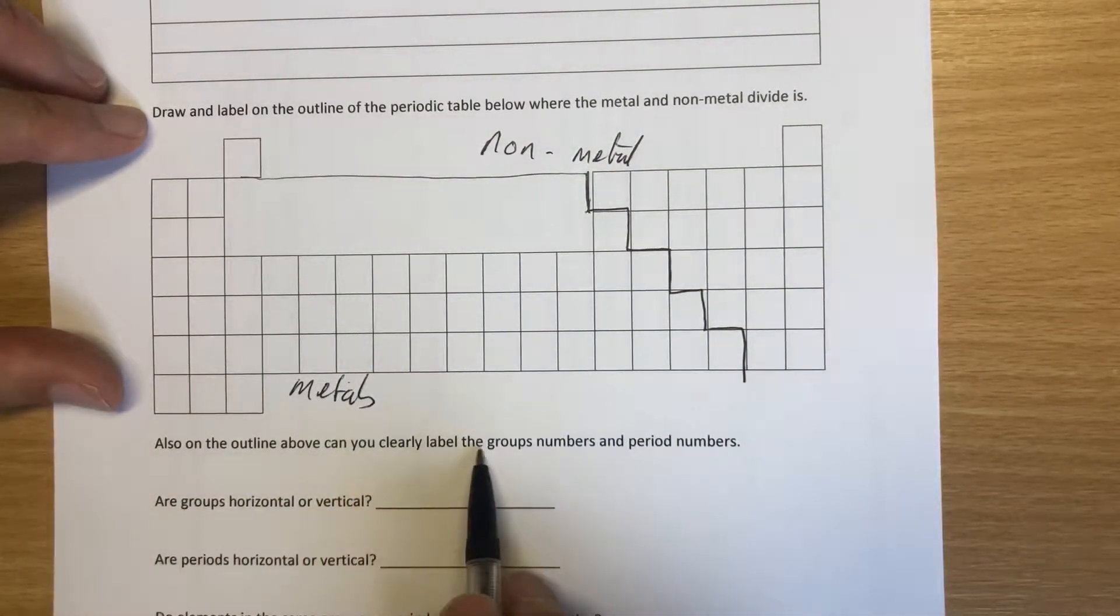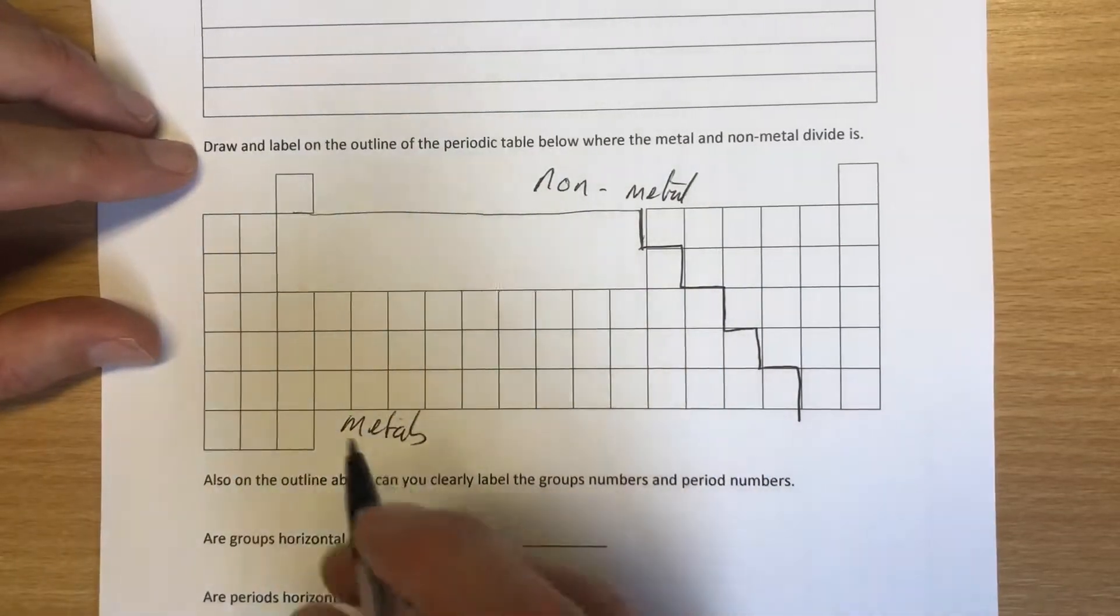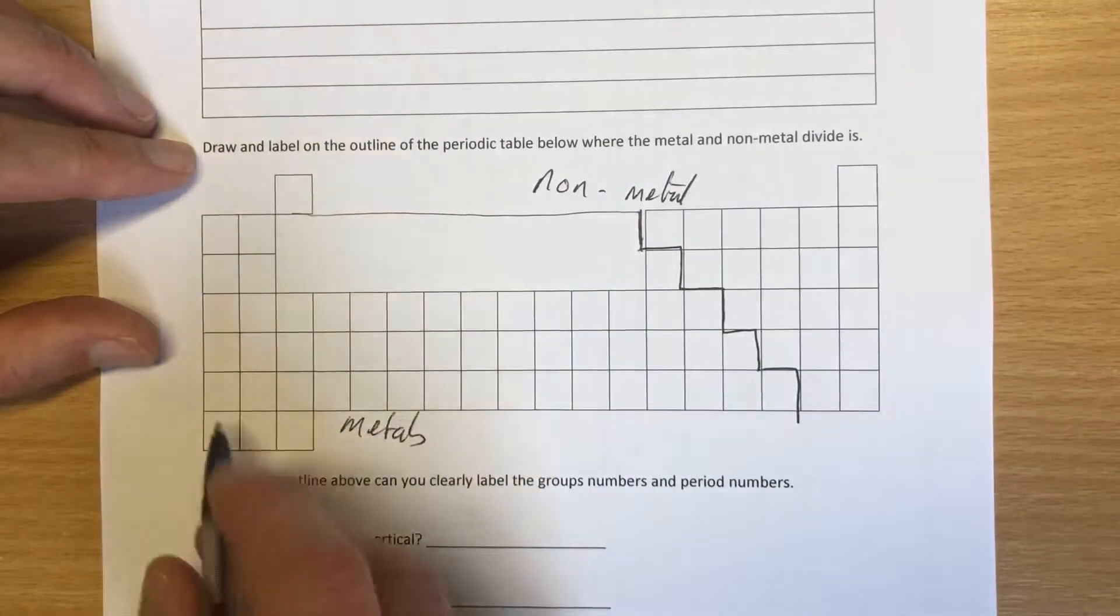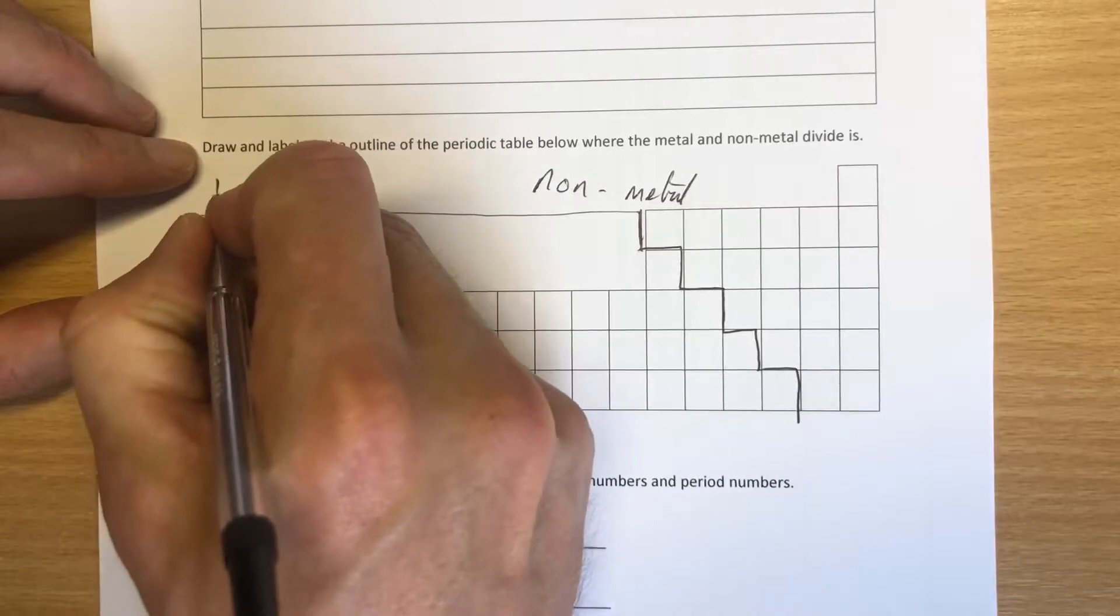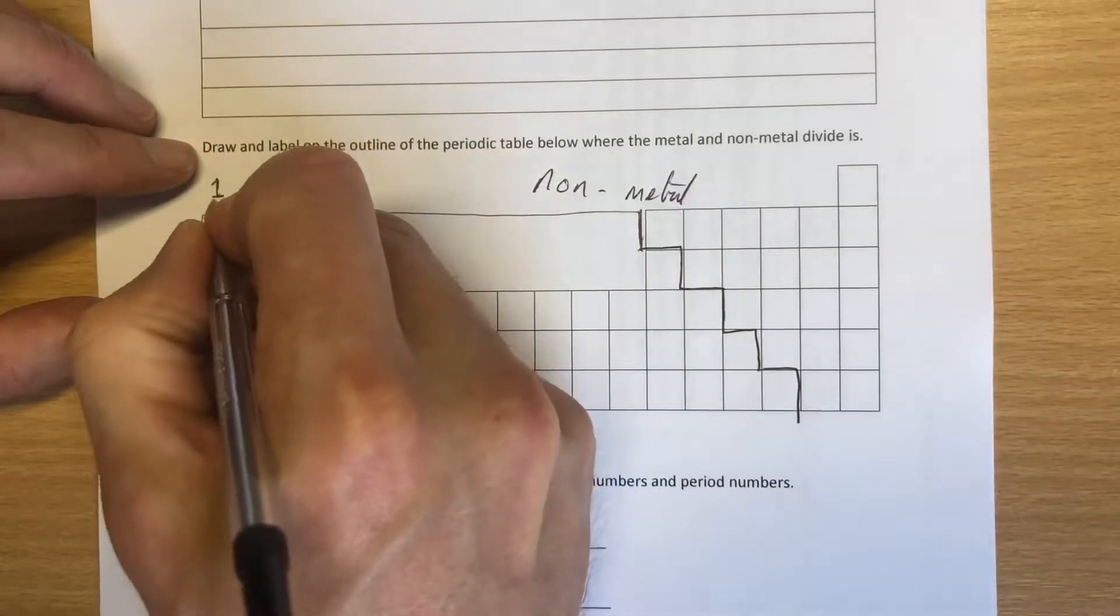Also on the outline can you clearly label the group numbers and the period numbers? Remember, groups go down. So this is group one here, and this is going to be group two down here.